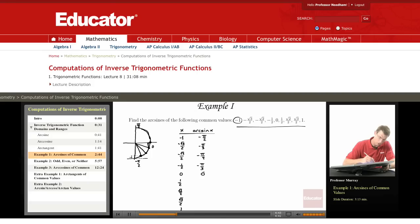What angle has sine of 1/2? Well, what angle has vertical y coordinate 1/2? That's π over 3.